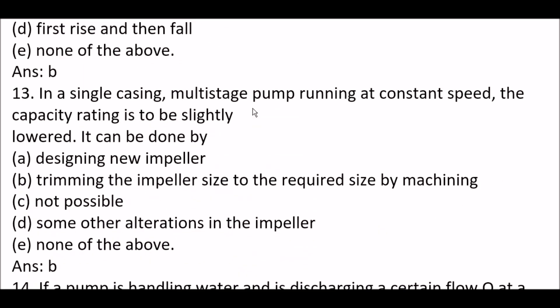Next question. In a single casing, multi-stage pump running at constant speed, the capacity rating is to be slightly lowered. It can be done by trimming the impeller size to the required size of machining, option B.